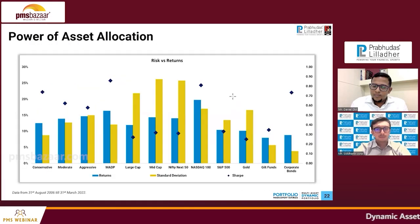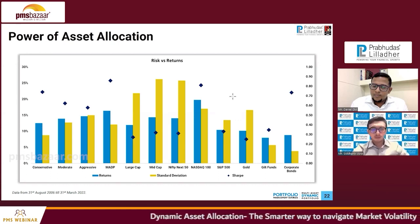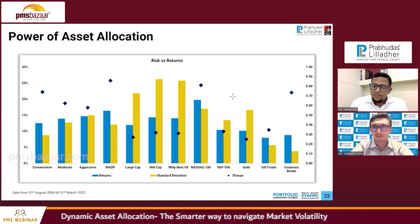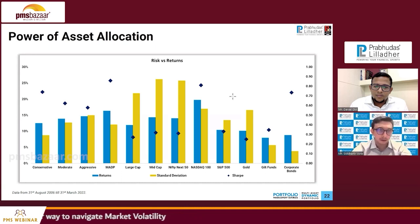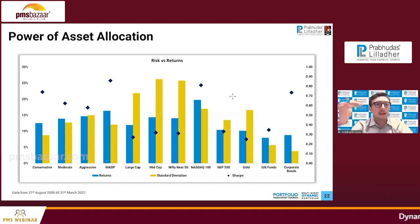When the model gives a weakness signal for equity markets, will you exit completely or gradually reduce positions? We don't take sharp decisions like trimming from 80% to 10% overnight. It works in a staggered manner — we move in approximately 10% increments at a time.